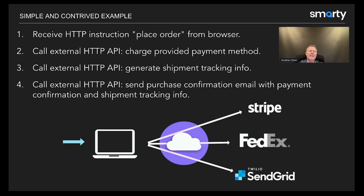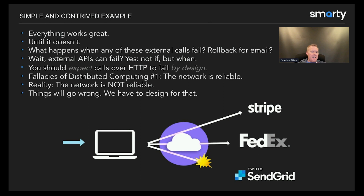Everything works great until it doesn't. What happens when any of these external calls fail? There are three different calls made in this situation. When things fail, how do you handle it?